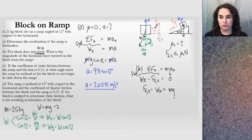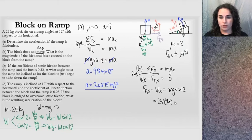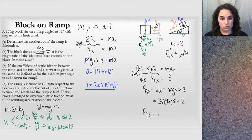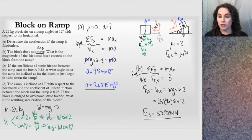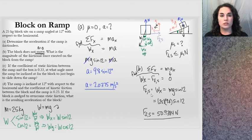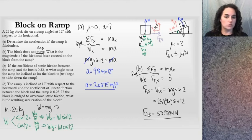The static frictional force equals mg times sine 12. Plugging in numbers: mass is 25, g is 9.8, and sine 12 gives a result of 50.9384 newtons. I don't even need to know the coefficient of static friction to calculate the static friction force. All that static friction force needs to do is overcome the component of the weight — it doesn't need to reach its maximum value, it just needs to balance that other force.